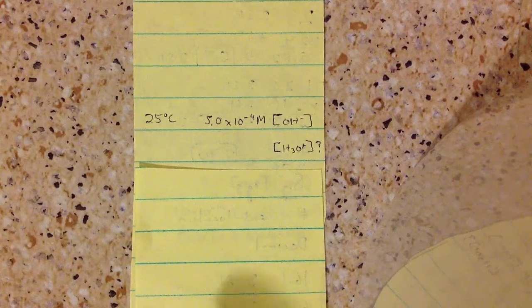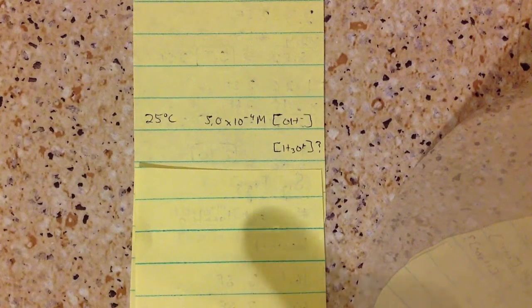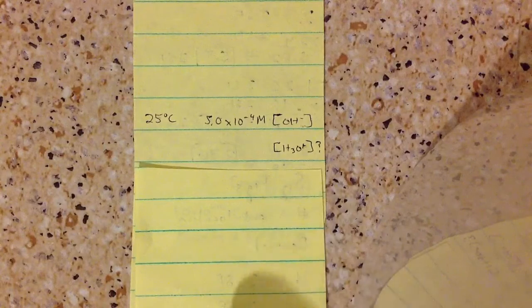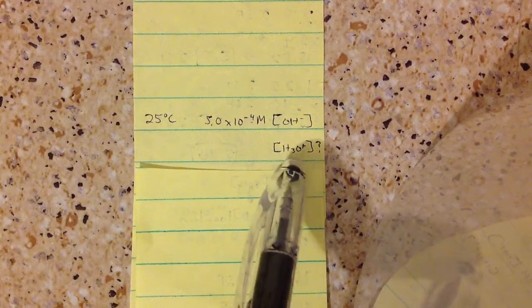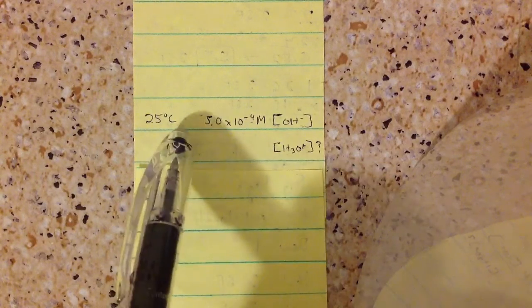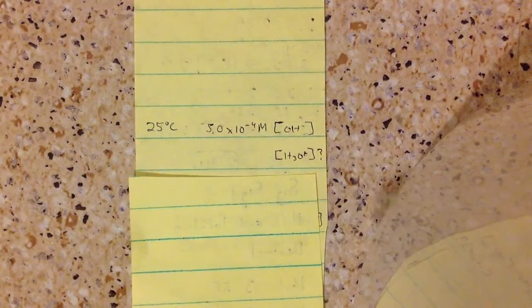If it was given that there was 5.0 times 10 to the negative 4th, a concentration of hydroxide, and it wanted you to find what was the concentration of hydronium at 25, this is what you do.